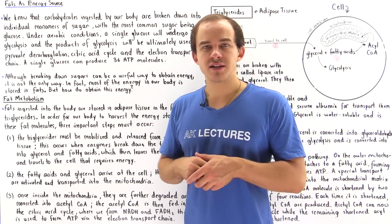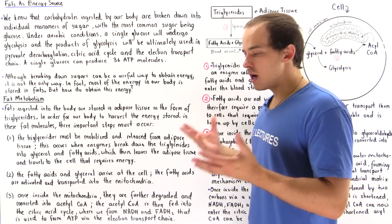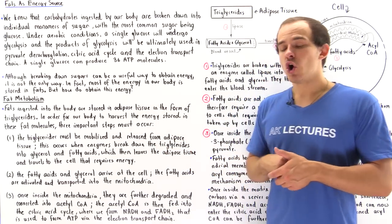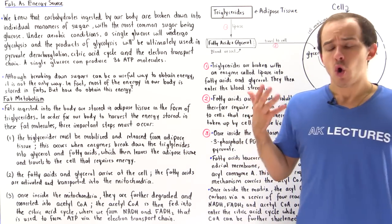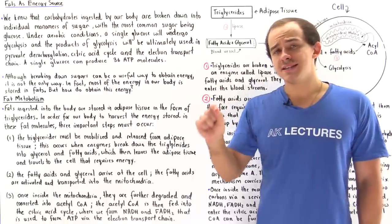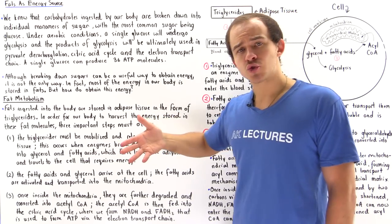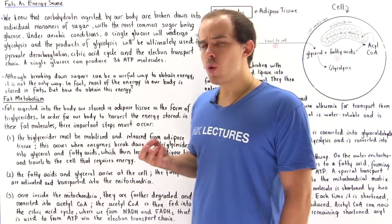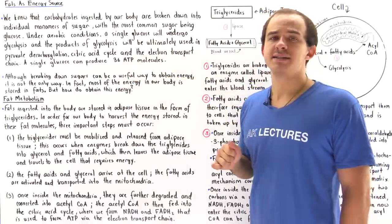The glycolysis process breaks down glucose into two pyruvate molecules. Those eventually go into the mitochondrial matrix where they undergo a decarboxylation reaction to form acetyl coenzyme A, which is fed into the citric acid cycle. The citric acid cycle produces NADH and FADH2 molecules, and all the NADH and FADH2 produced in aerobic cellular respiration go onto the electron transport chain to form ATP molecules. One glucose molecule produces a net of 36 ATP molecules.